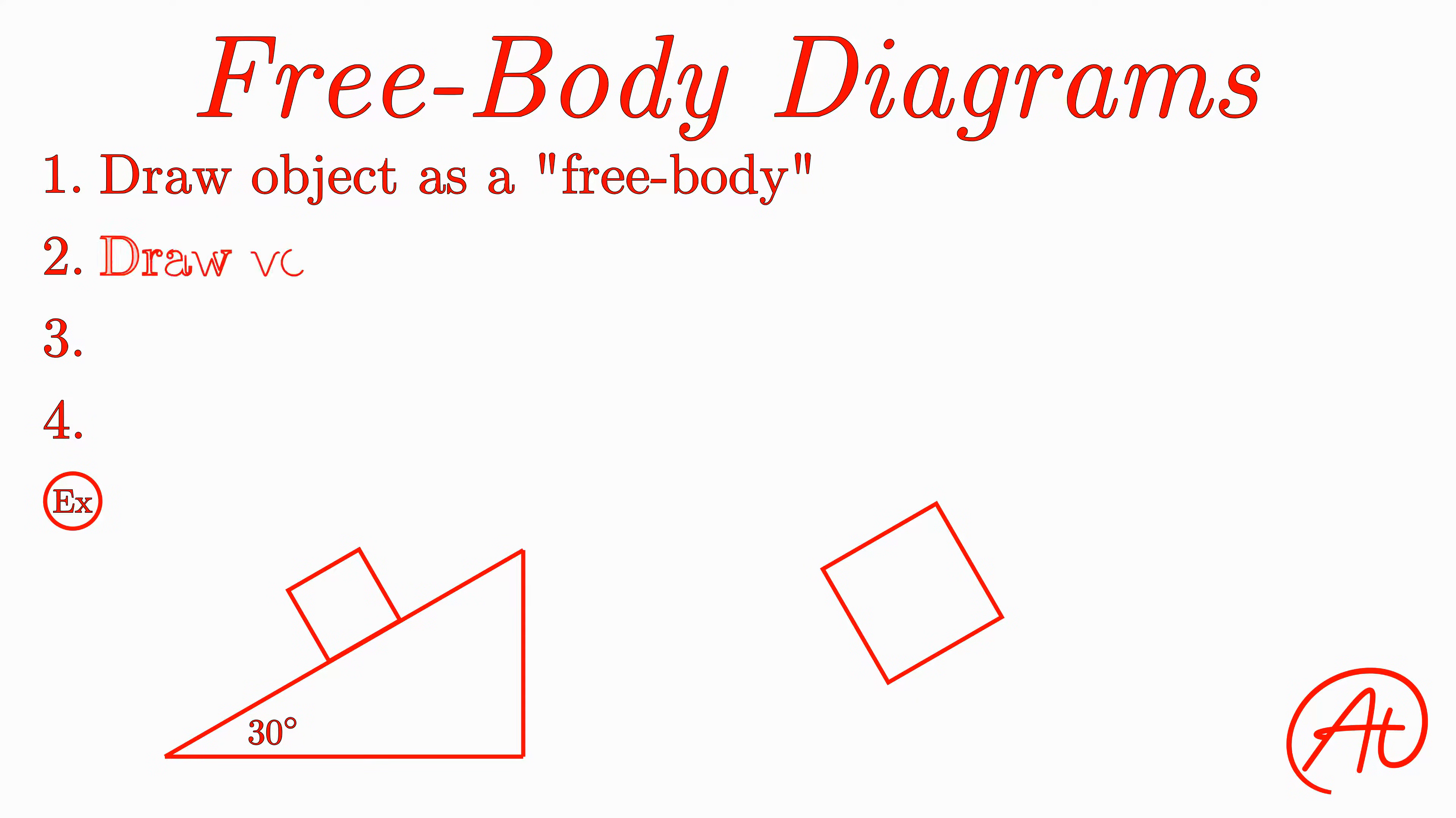Next, we want to draw vectors for each force applied to the object that start from where the force is acting and point in the direction it is being applied. So first, we have the object's weight that acts from its center of gravity, which we'll say is right in the middle, and pulls it straight downward.